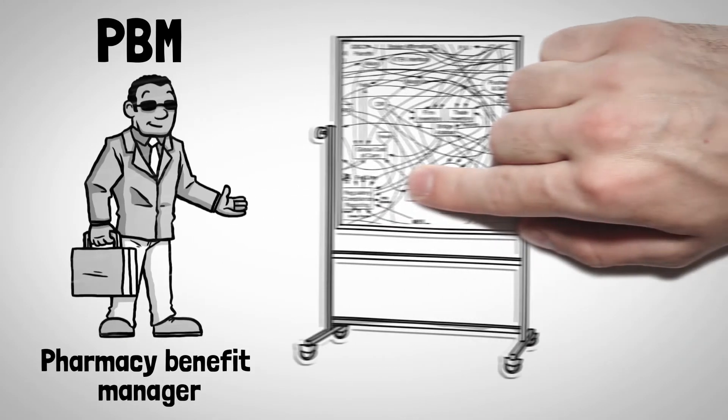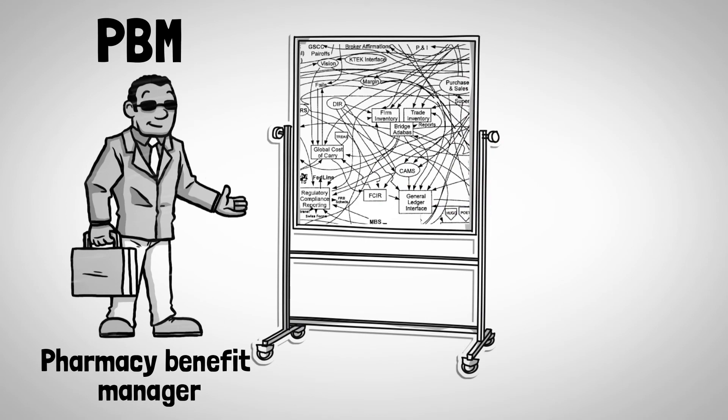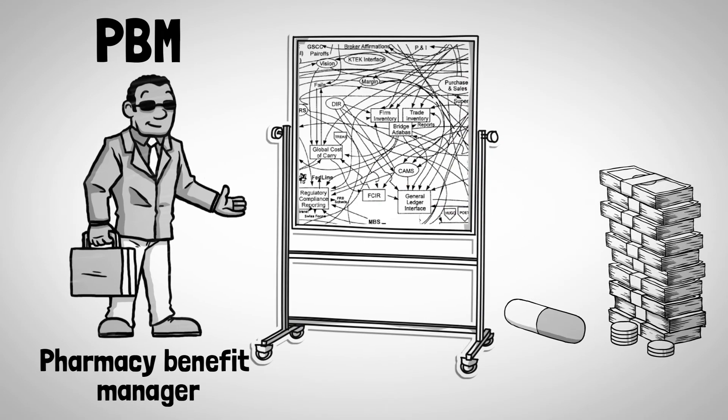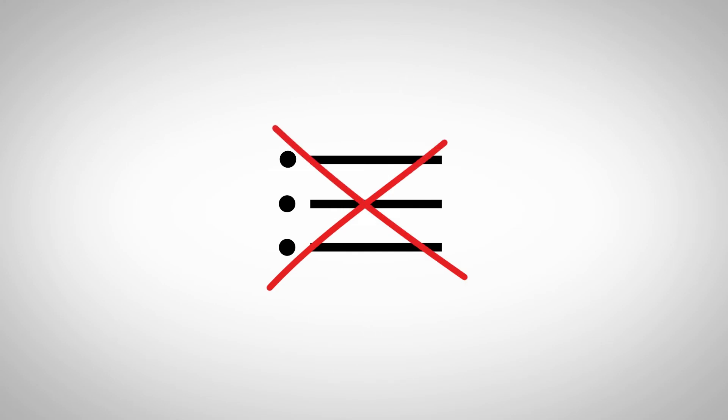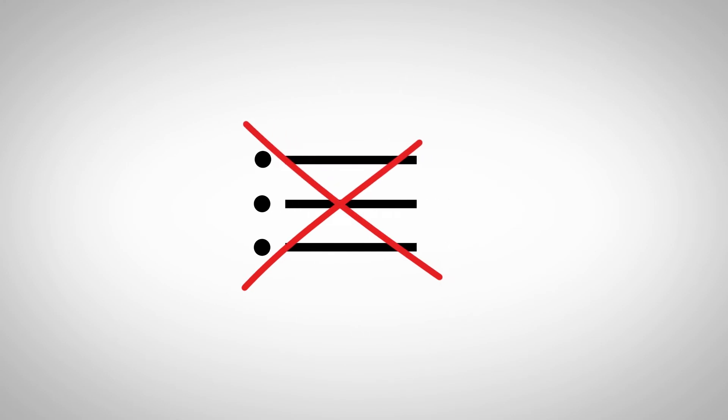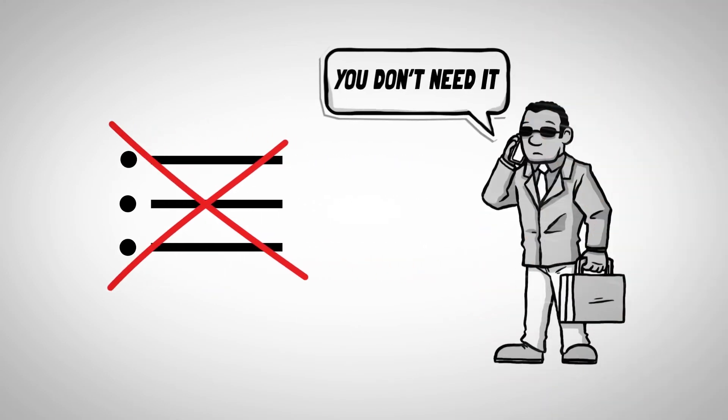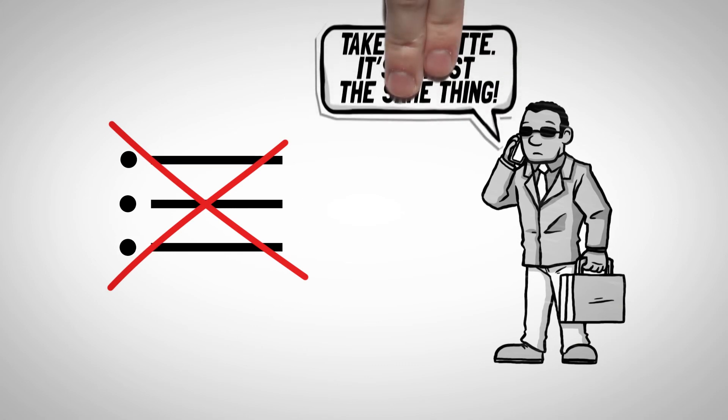Under a complex scheme between PBMs and pharmacies, patients end up paying more for less. This process can also restrict choice, as that middleman might prevent you from getting a life-saving medication, or a hazelnut iced coffee.